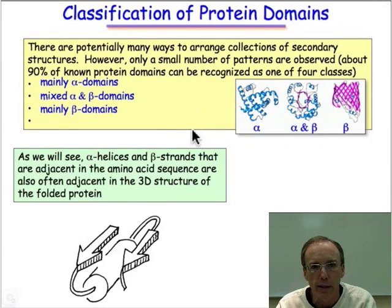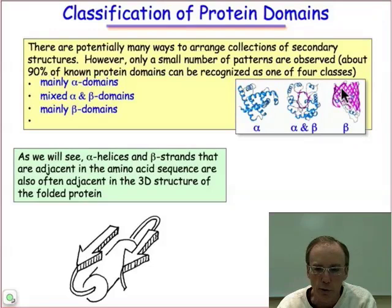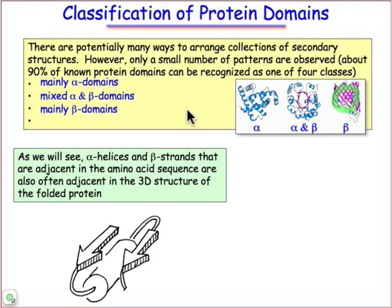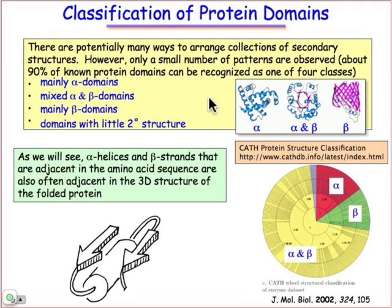The other main classification is ways that beta sheets come together. Here we see a beta barrel, which is a tubular kind of structure where the sheet has ended up wrapping around on itself to make a closed three-dimensional cylindrical object that has an interior to it. And then there are basically what's known as domains with little secondary structure. We won't spend very much time with them — most everything we're interested in falls into those three different categories.